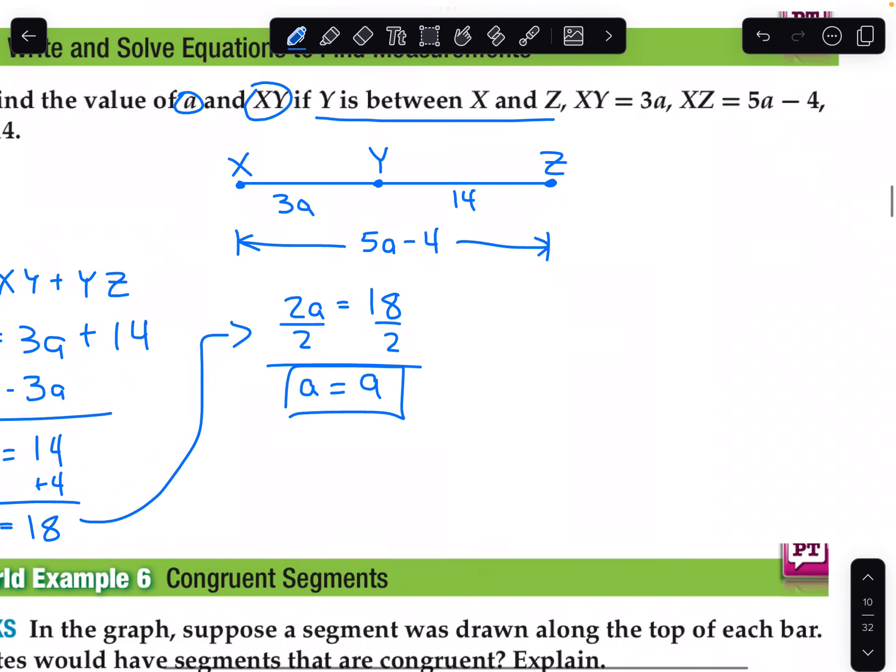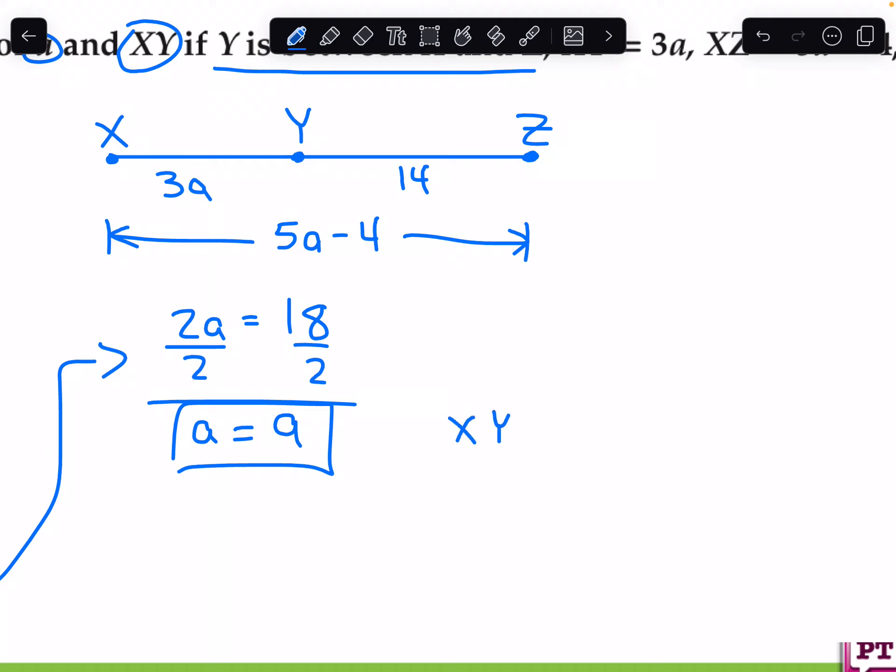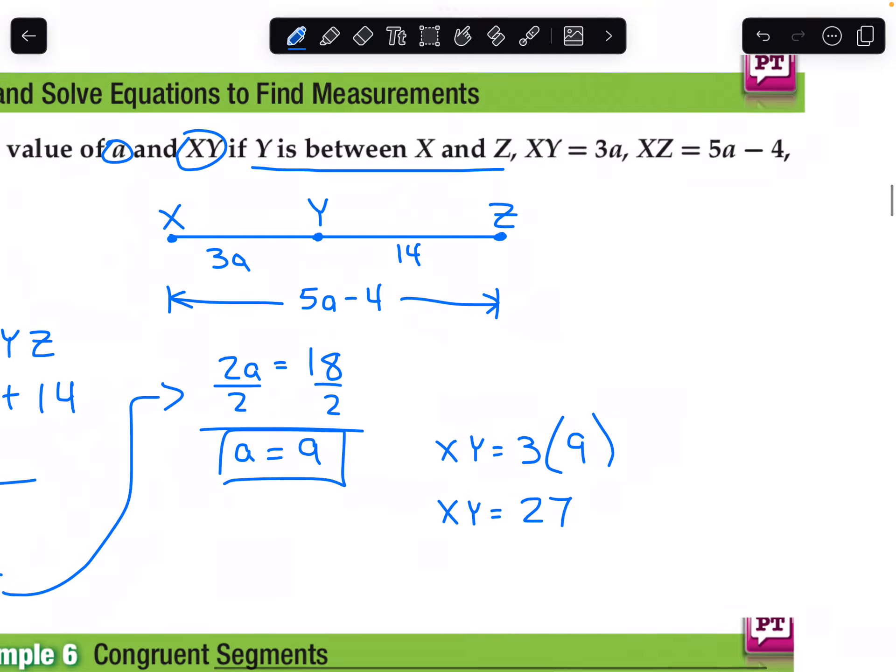We are halfway done. We're not entirely done because the task also asks for XY. Now we have to fill in XY distance. XY equals 3A. So it's 3 times what we just found, 9. XY equals 27. No units, just raw numbers.